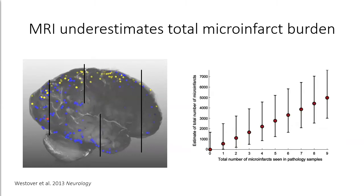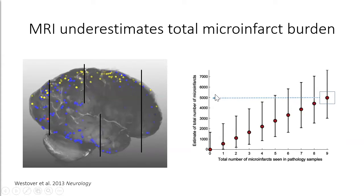This was already described in a paper done here at MGH, where they did an extrapolation study based on routine autopsy samples. Based on this work, it is estimated that if you see about nine microinfarcts in just a few routine autopsy samples, the actual estimated total number in the brain is closer to 5,000. Translating this to a brain where we detected only 60 or so on MRI, we're only detecting the tip of the iceberg. For microbleeds, however, we're actually in a pretty good range and can probably see the numbers that are actually present in the brain.